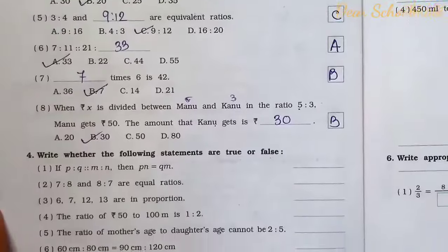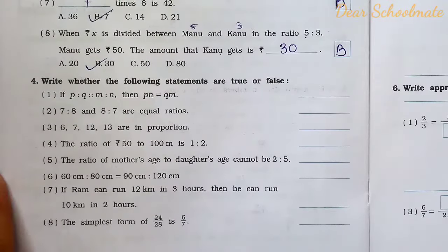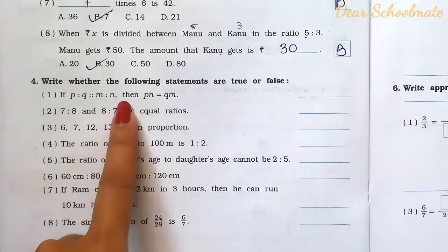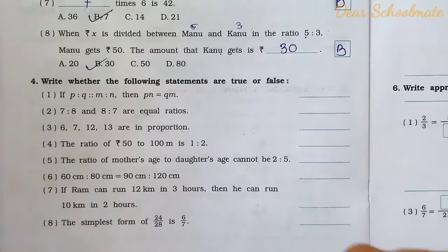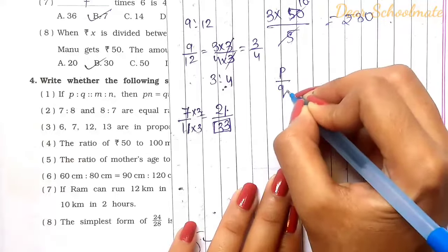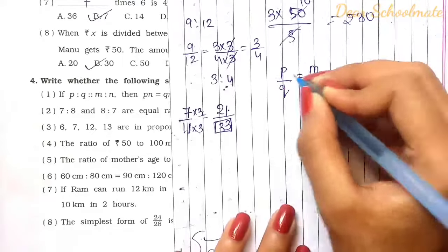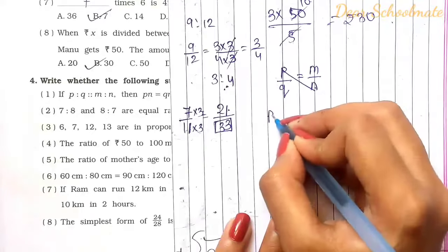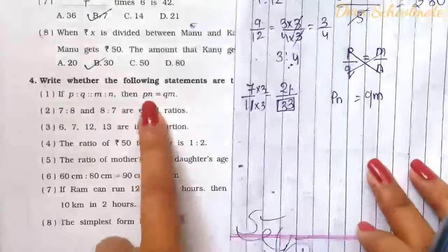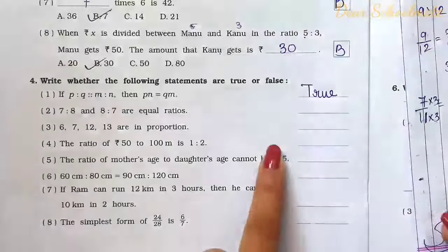Question 4: State whether the following statements are true or false. Number 1: If p is to q is in proportion to m is to n, then pn equals qm. Writing as fractions p by q and m by n, cross multiplying gives pn equals qm. The statement is true.